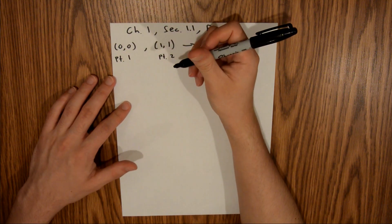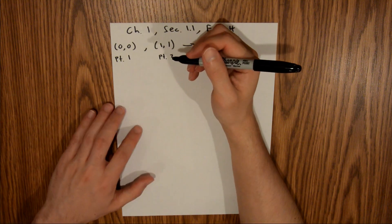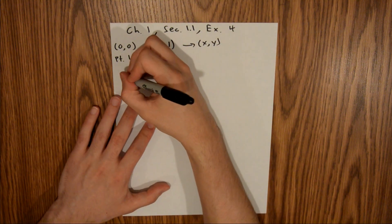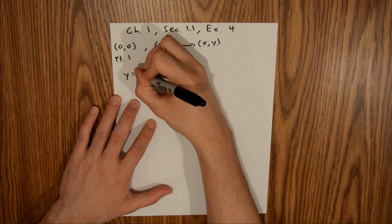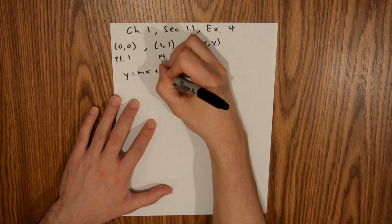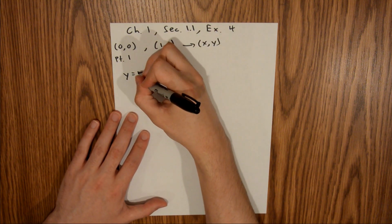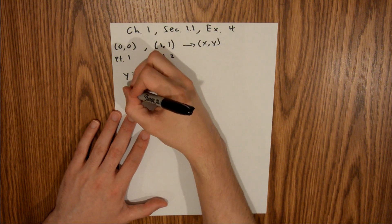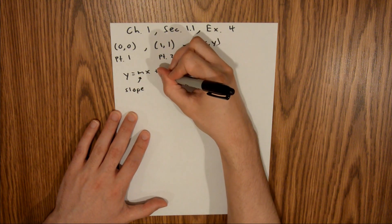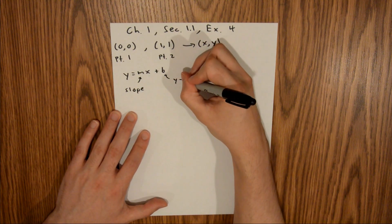We're asked to find an equation for a line that passes through these points. The equation for a line is y equals mx plus b, where m is the slope and b is the y-intercept.